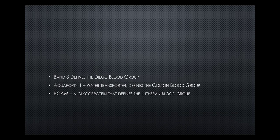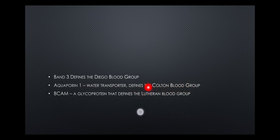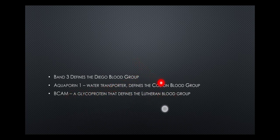Apart from the four blood groups we know — A, B, AB, and O — there are newer groups identified: the Diego blood group defined by band 3, the Colton blood group defined by aquaporin 1, and the Lutheran blood group defined by BCAM. It is these newer blood groups that sometimes cause transfusion reactions even when blood is cross-matched.